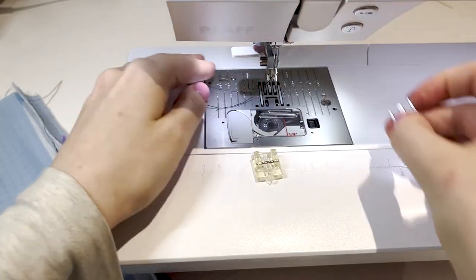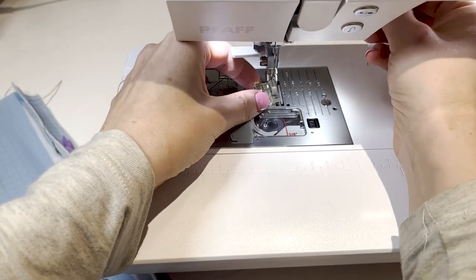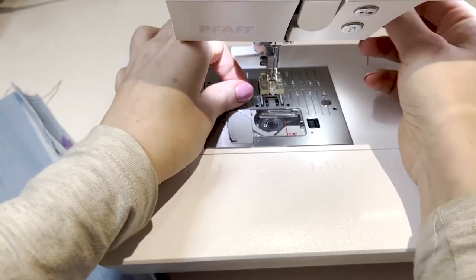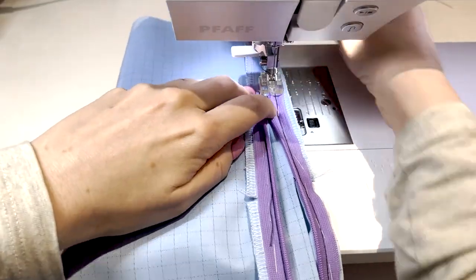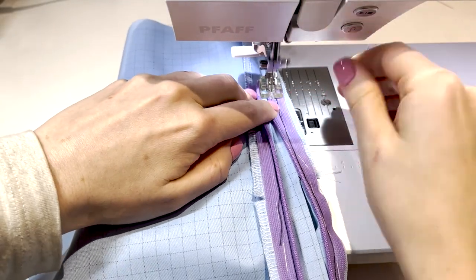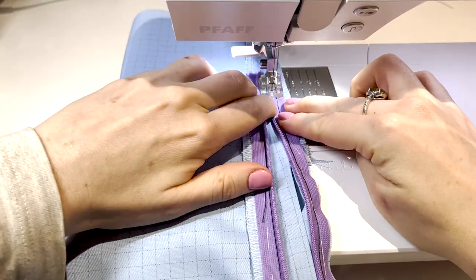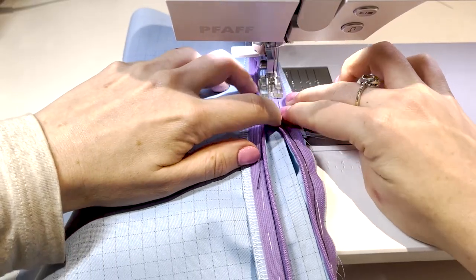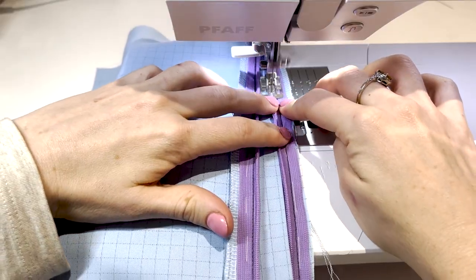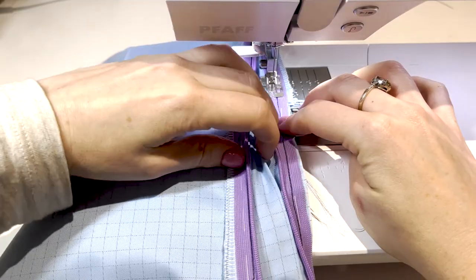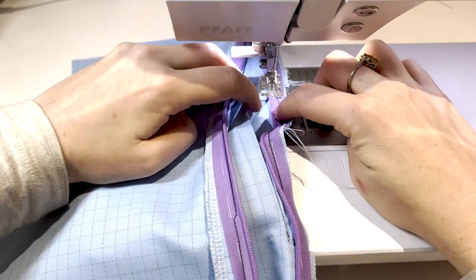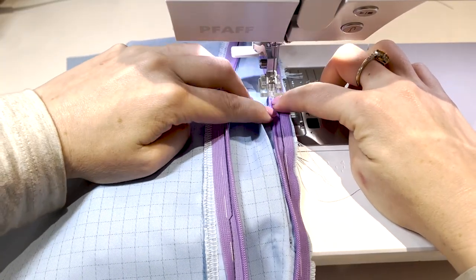Now we switch to the invisible zipper foot. Now we are going to repeat the process, stitching from the top of the zipper down on both sides in the same direction. Use your finger to curl out the zipper teeth so that you can stitch as close as possible without stitching on the teeth. When you reach the pocket, pull it out of the way to make sure you do not catch it in the stitch line.